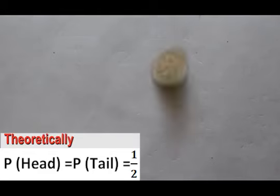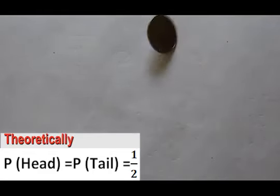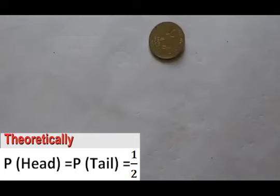Theoretically, the probability of getting a head is equal to the probability of getting a tail, which is one out of two.